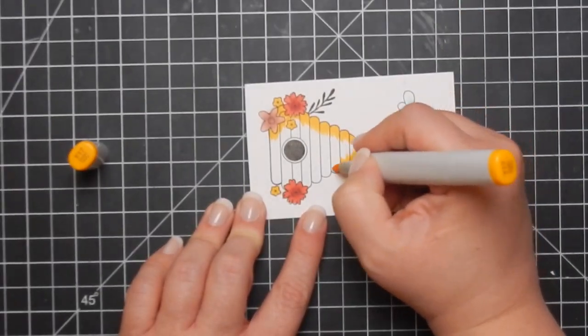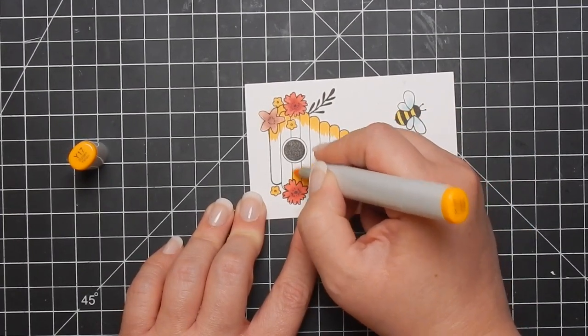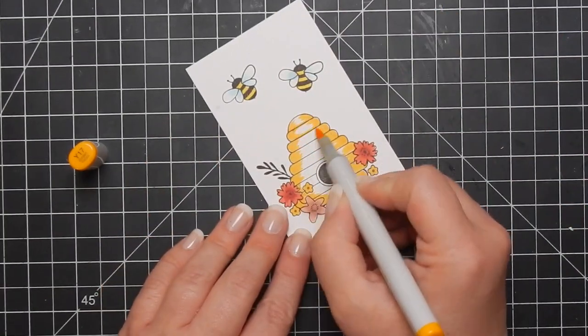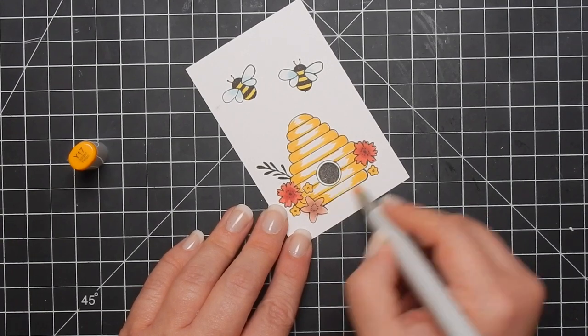So I'm just going to finish coloring this up. I really like this bee stamp set that comes in the kit. It's very pretty. The beehive image is very pretty. I like the flowers around it.